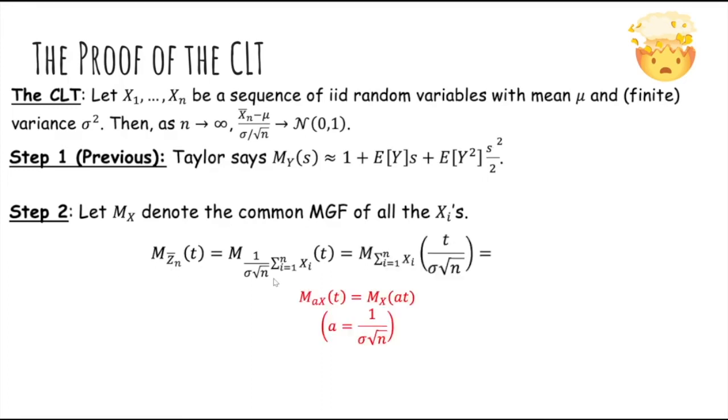So now we have the MGF of a constant times a random variable, so we can apply this property we discussed earlier. The MGF of AX at t is just MGF of X at At. So we can use A as this constant here and get this result. Now because we have the MGF of the sum of the Xi's and the Xi's are all independent, the MGF of the sum is just the product of their MGFs.